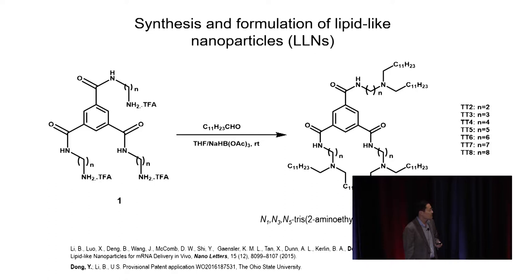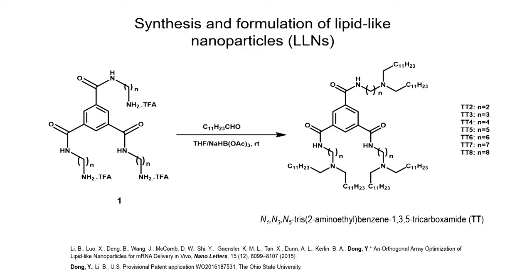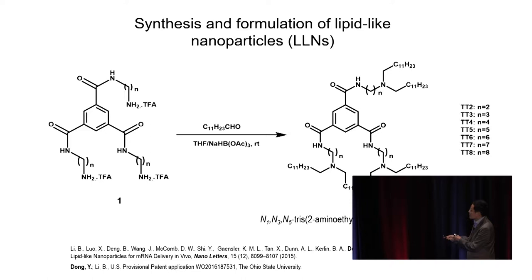Based on our previous experience in delivery of small RNA, we designed new types of lipid derivatives. This small compound is composed of a core amine, three amide linkers, and multiple lipid chains. Through a one-step reaction — reductive amination — we can synthesize these TT lipids at larger scale and tune the carbon chain length from two to eight carbons or even longer.